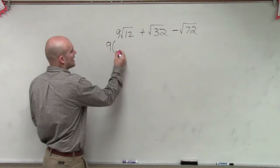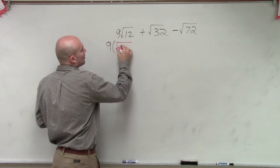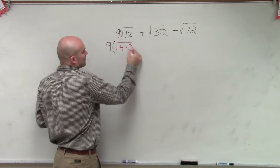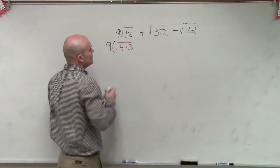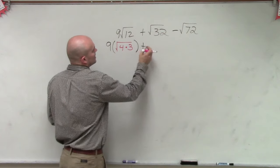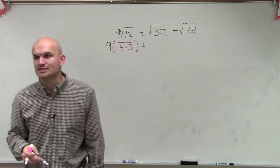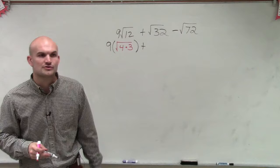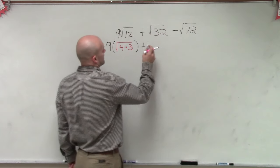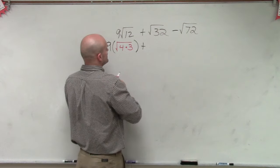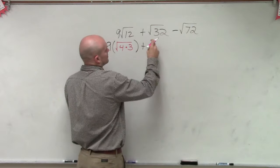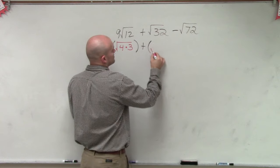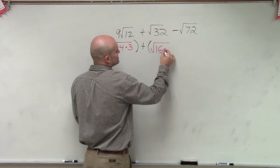12 can be rewritten as the square root of 4 times 3, then plus square root of 32. What is the largest square number that we can divide into square root of 32? So this becomes square root of 16 times 2.